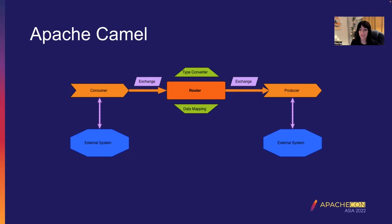We're looking at the flow of an exchange through a route. A strange thing to notice is that a route first starts with a consumer, and then producers are at the end. If you're familiar with Kubernetes and Kafka, you know that producers are at the beginning and consumers at the end — but here you have to look at it from the perspective of the external systems. Consumers consume messages from external systems and bring them into the route; producers send messages to the external system. What enables the exchange to the external system is the actual Camel component.